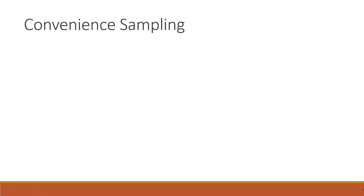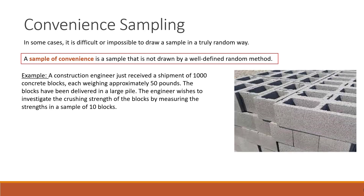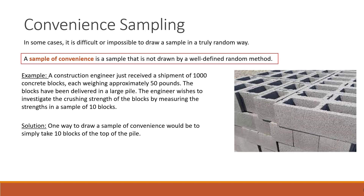Now let's talk about the last sampling method — convenience sampling. Its name suggests what the method might be about. In some cases, it is difficult or impossible to draw a sample in a truly random way, so we use a convenience sample that's not drawn by a well-defined random method. For example, a construction engineer receives a shipment of 1,000 concrete blocks each weighing approximately 50 pounds, delivered in a large pile, and wishes to measure the crushing strength of a sample of 10 blocks. Simple random sampling might require pulling blocks from the bottom of the pile, so convenience sampling would be more practical — simply taking 10 blocks off the top of the pile and measuring their crushing strength.